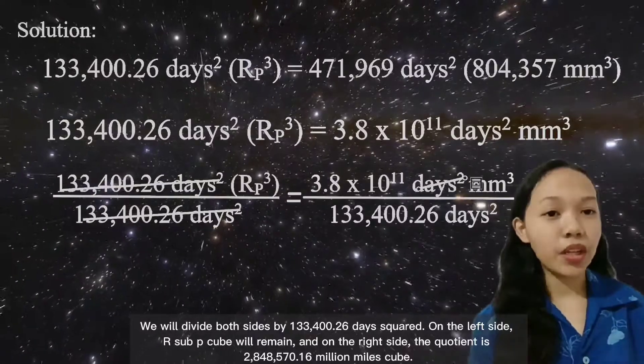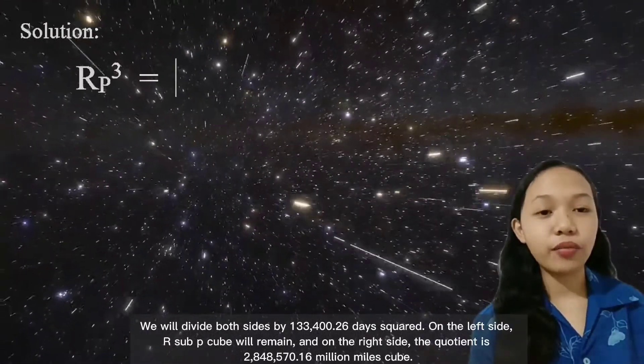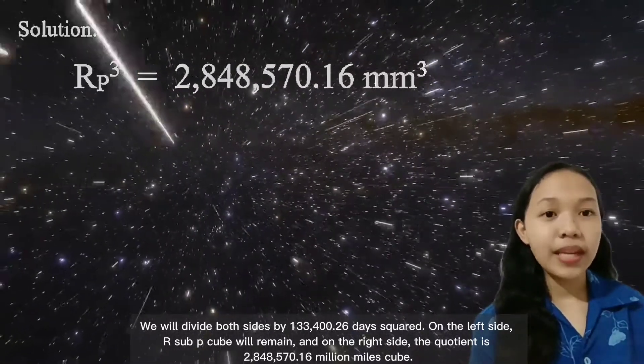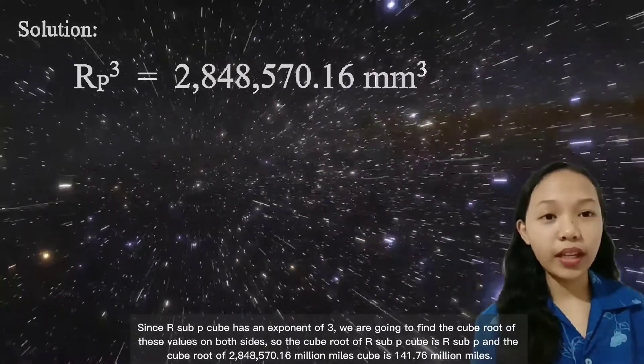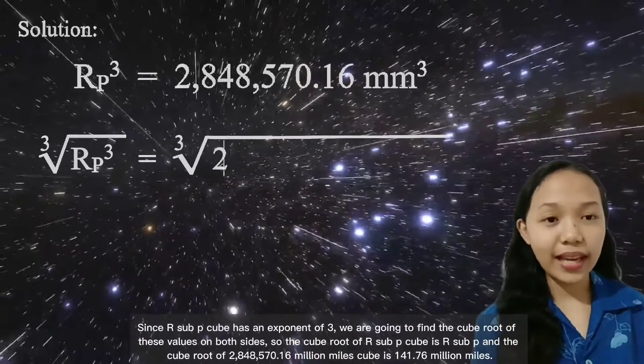On the left side, R sub P cubed will remain, and on the right side, the quotient is 2,848,570.16 million miles cubed. Since R sub P cubed has an exponent of 3, we are going to find the cube root of these values on both sides.